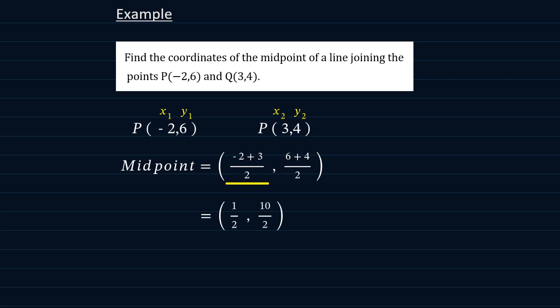If we simplify, minus 2 plus 3 is 1, so we have 1 over 2, and 6 plus 4 is 10, so 10 over 2.